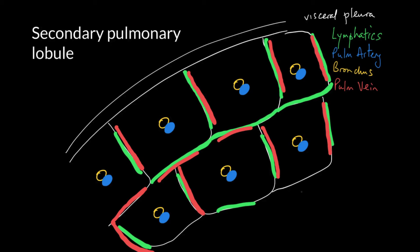On an HRCT you tend not to see the septa unless they are full of blood or fluid, so this imaginary grid is excluded from your vision on an HRCT unless they are pathological. The pulmonary vein and the lymphatics run in the septum, and so when you have pulmonary venous hypertension or lymphangitis this leads to the so-called septal lines or Kerley B lines as seen on a chest X-ray.